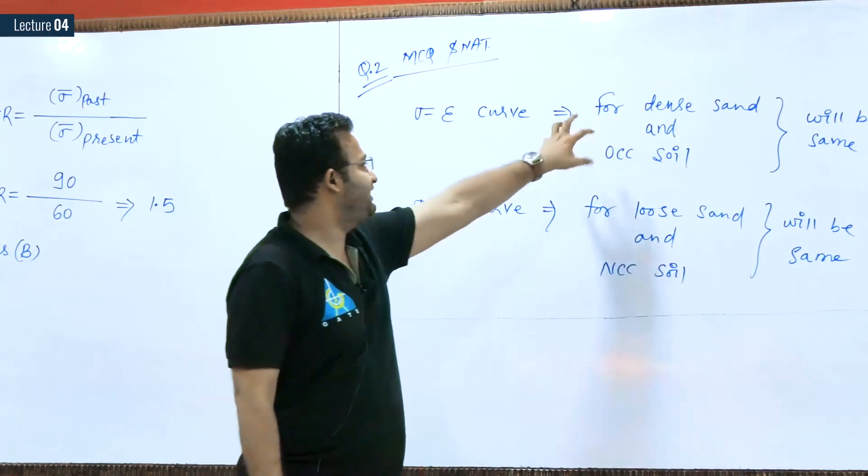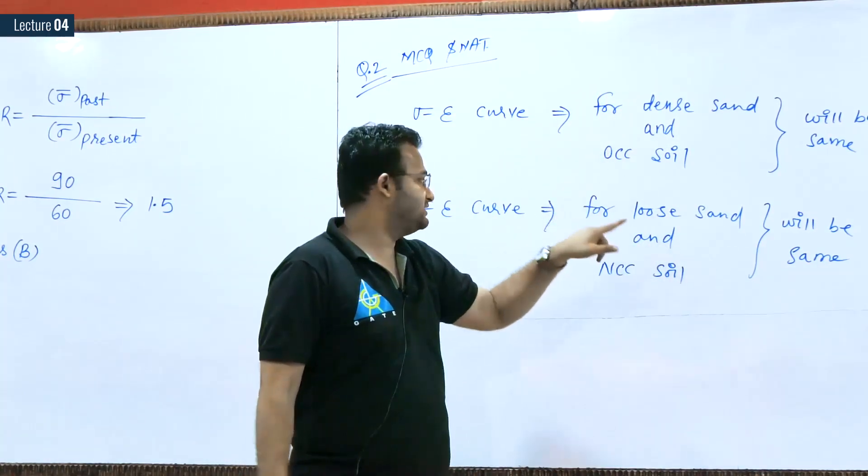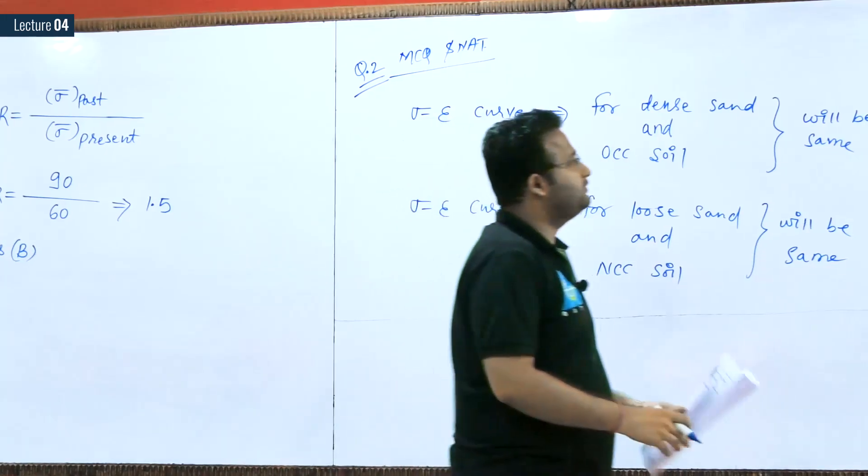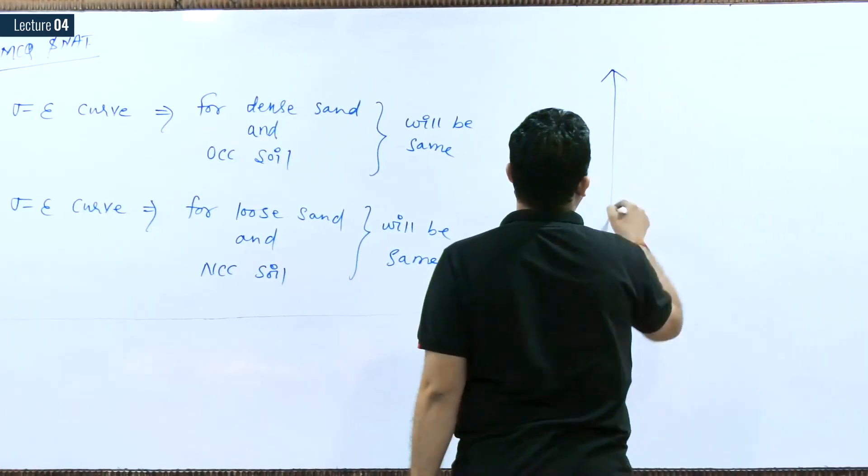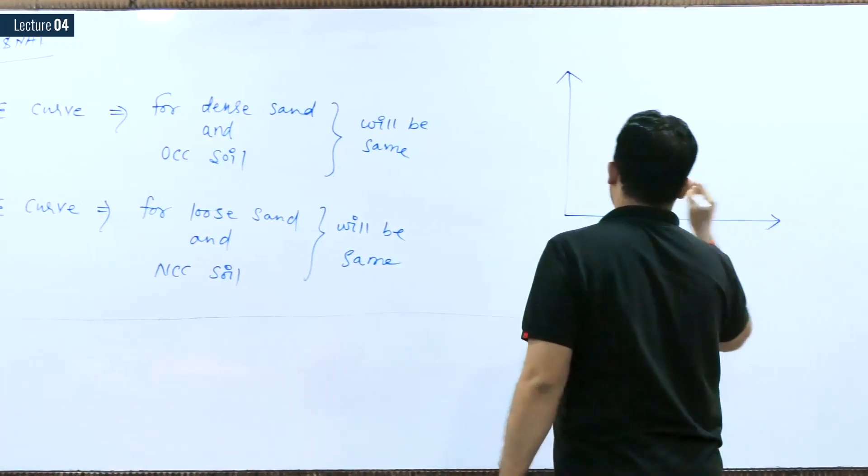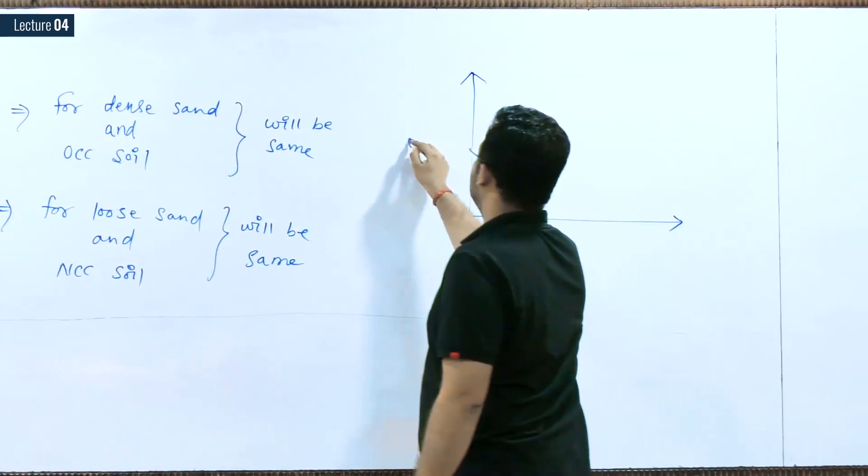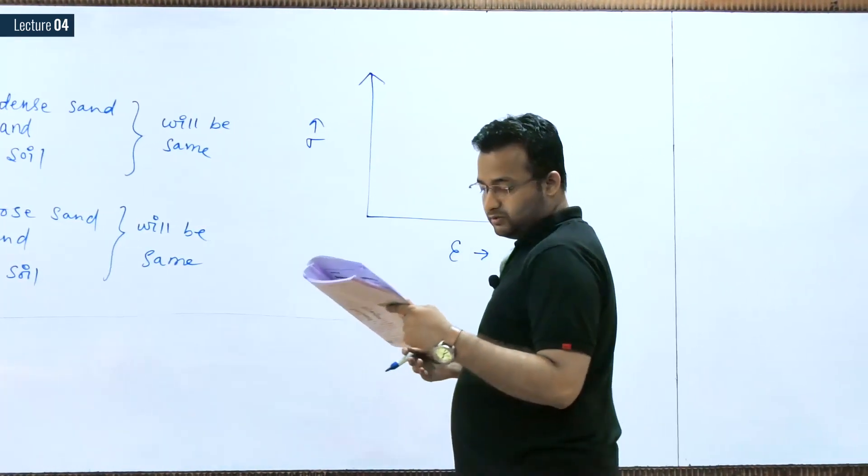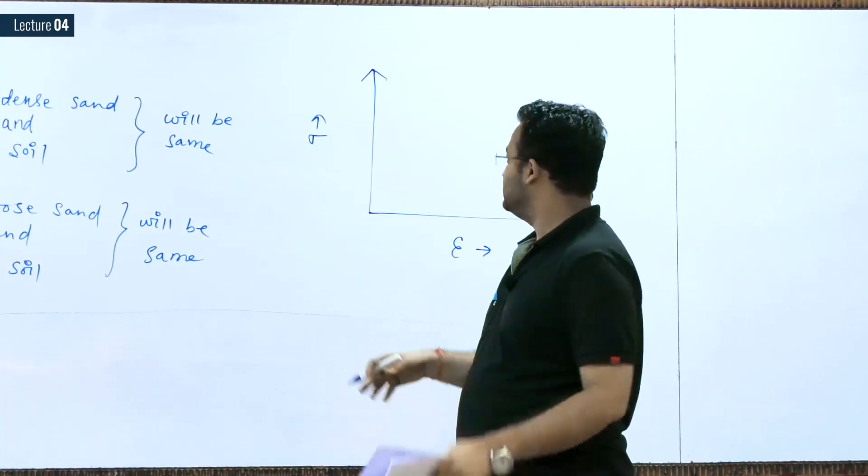They will be the same because the behavior is almost the same. Very dense, OCC is also very dense. Loose, NCC is also very loose. So behavior will be the same. If you ask me to draw the stress-strain curve for OCC soil or dense sand, here I can take the stress, here I can take the strain.